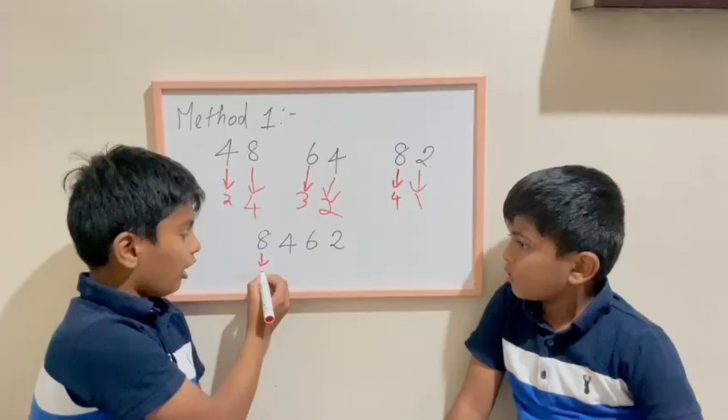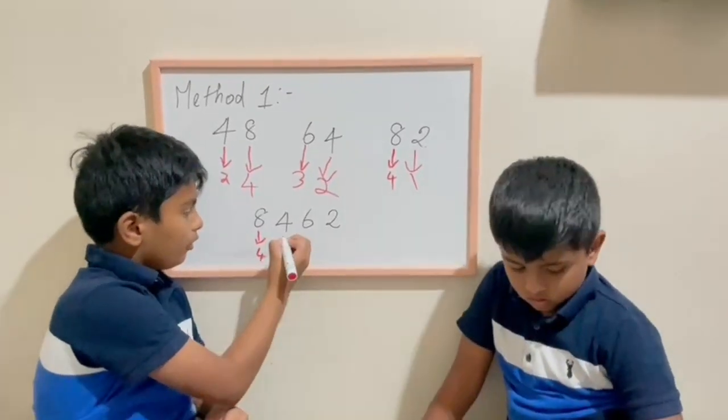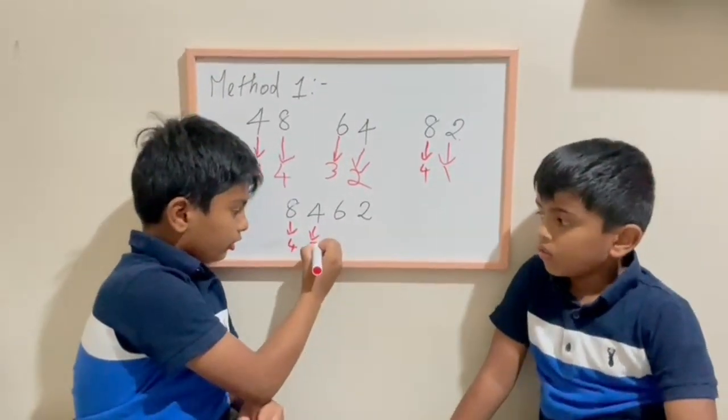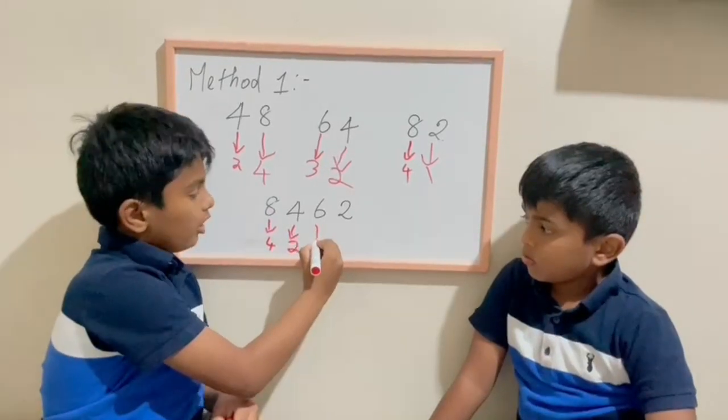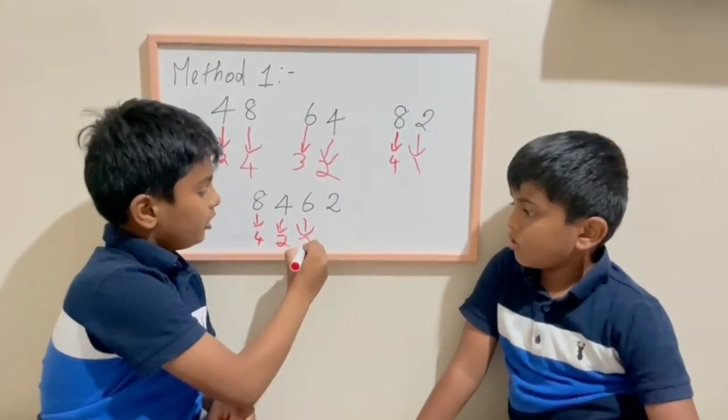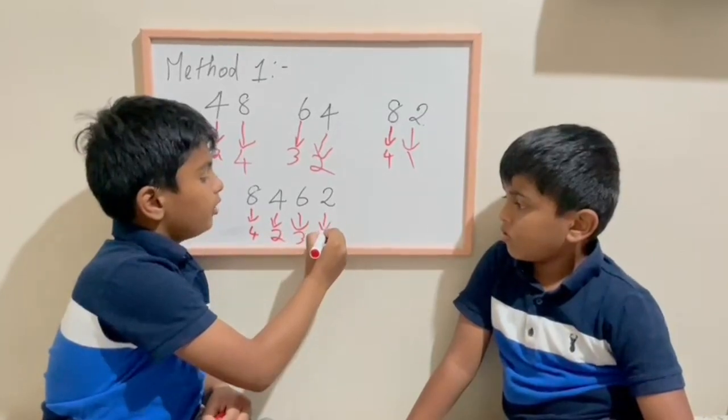4231. Correct. 8 half is 4, 4 half is 2, 6 half is 3, 2 half is 1.